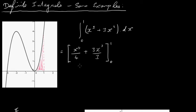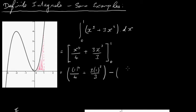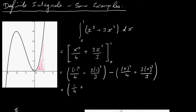The next thing we want to do is substitute in 1 for x and then 0 for x, and subtract the two. So we have 1 to the power of 4 over 4, plus 3 times 1 to the power of 3 over 3. Then we subtract what we get when we substitute in 0: 0 to the power of 4 over 4, plus 3 times 0 to the power of 3 over 3. Well, 1 to the power of 4 is 1, so we get 1 over 4, and 3 divided by 3 is 1, so that term is just 1. The part where we substitute in 0 is just 0 in both cases. So our answer is 1 plus 1 quarter, which is 1 and 1 quarter.